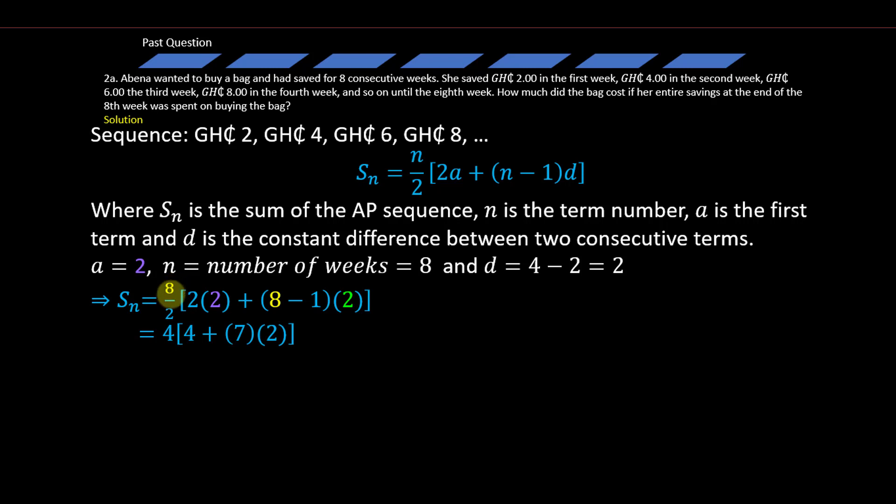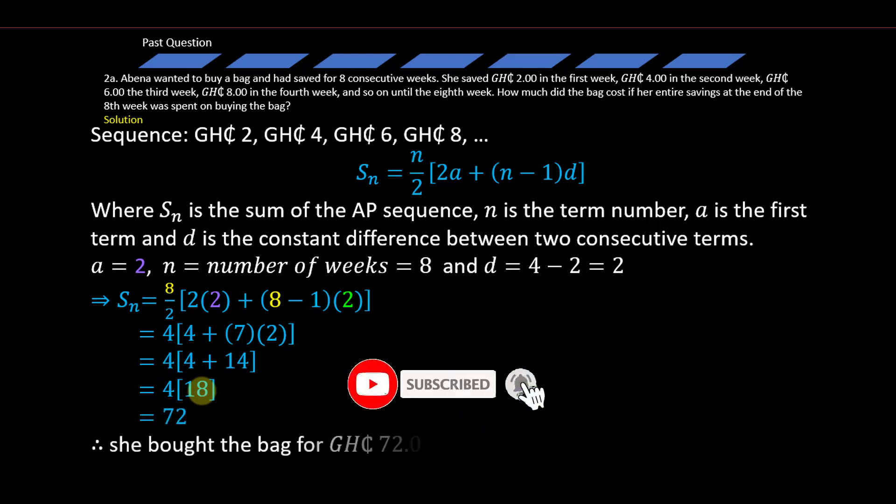Now in substituting the values in, you get to realize that 8 over 2 simplifies to 4, 2 times 2 simplifies to 4, then 8 minus 1 simplifies to 7, times the 2. Simplifying further we get 4 times open bracket 4 plus 7 times 2 is 14 close bracket. What is in the bracket sums up to 18, and 4 times 18 gives us the final answer which is 72. So we can therefore conclude that she bought the bag for 72 Ghana cedis.